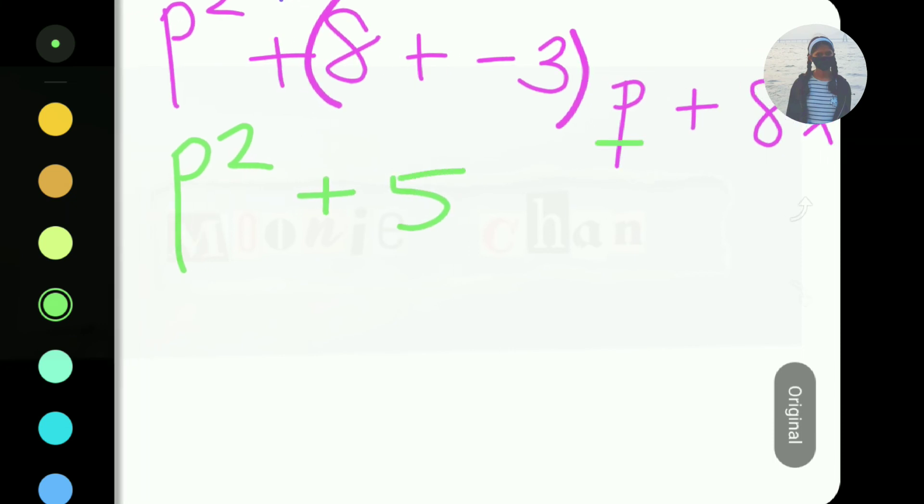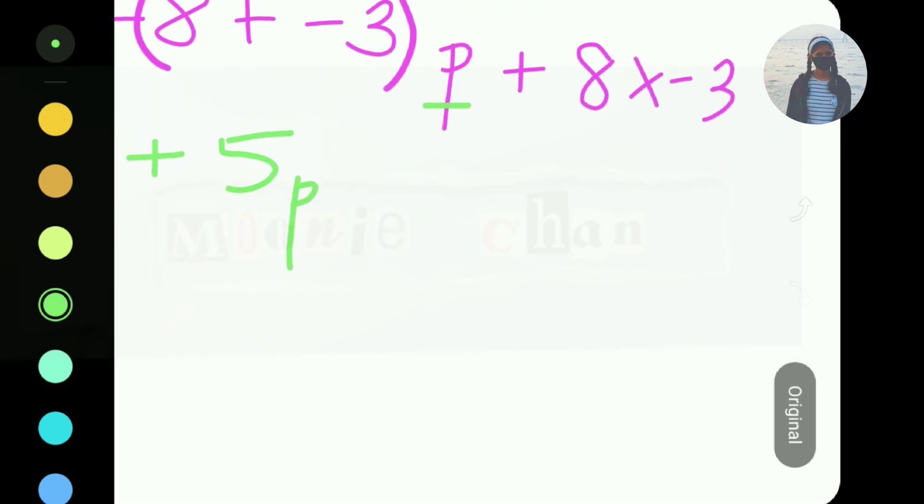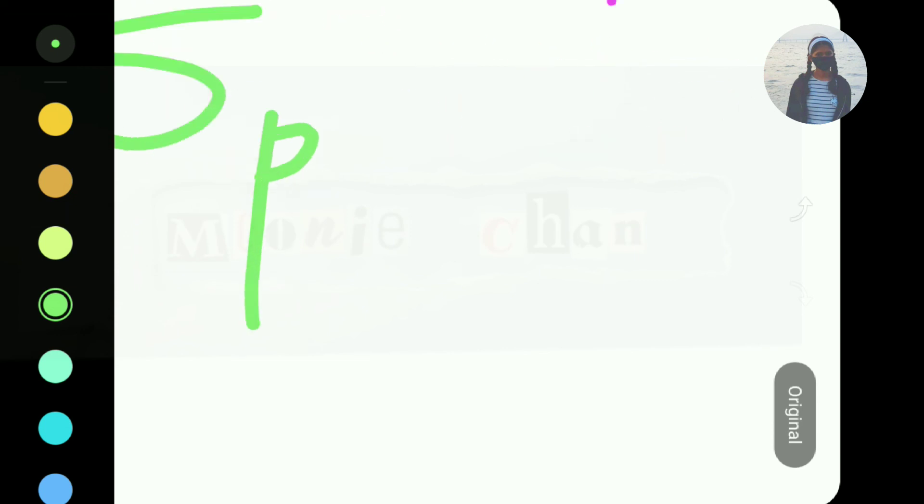Now, P as it is, 5P, plus now 8 multiplied by minus 3, which is minus 24, right? So, we'll write minus 24.